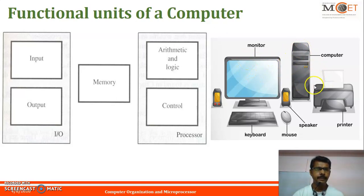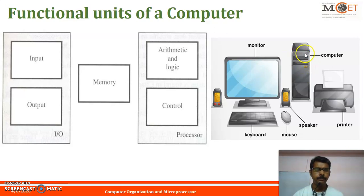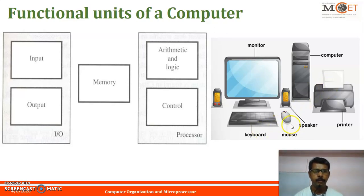Here is the processor — the CPU. Inside the CPU there is a motherboard, and in that motherboard there will be the ALU and control unit, and memory also inside the CPU. The output units include the monitor, speaker, and printer. Input units are the keyboard and mouse. There is also a device called a fax, which can be used as both an input device and an output device.